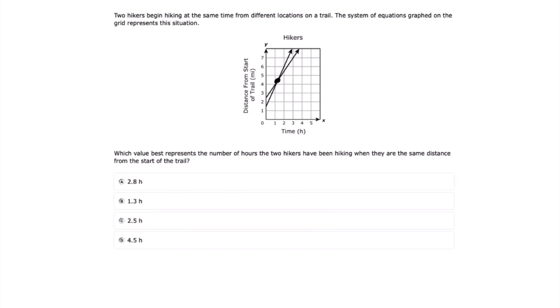And so we want to know the number of hours that those two hikers have been hiking once they get to that point. And so if we look at our x-axis, we see that the x values are time in hours. So whatever this point has for its x value is going to be our answer.